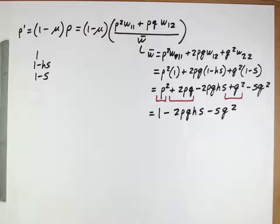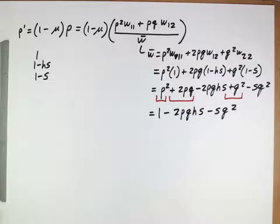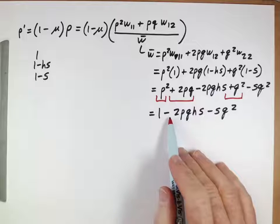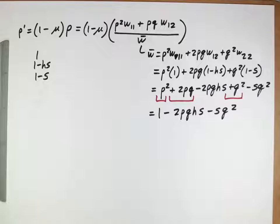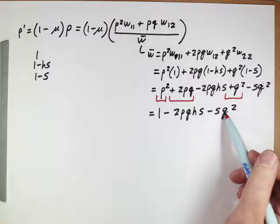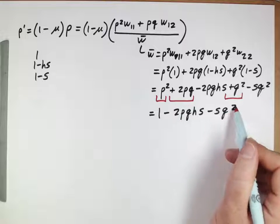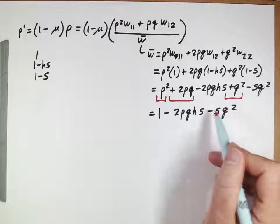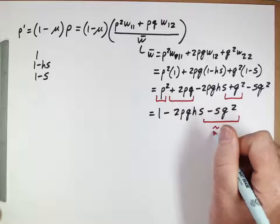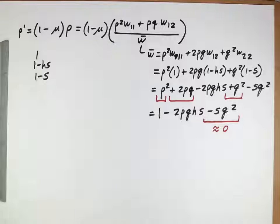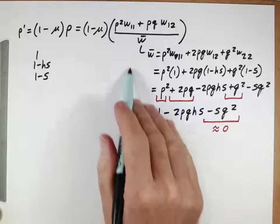So 1 minus 2pqhs minus sq². And now I'm actually going to do another simplification here, another step. We're thinking about the mean fitness here, and the mean fitness is going to be a little bit less than 1, because there are deleterious mutations that are segregating in the population, and it's going to be reduced by these two terms here. This term here, if we think about it, these deleterious alleles are rare, because they're being selected against. That means that q is likely to be a very small number and p is likely to be close to 1. If you take a really, really small number and square it, it gets even smaller. So this last term here is going to be much smaller than this term here. So for simplicity and to kind of make an approximation we can work with, we're going to assume that this thing is about 0, approximately 0, so we're going to neglect that term. So this will be our w̄.